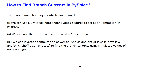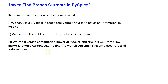Let us now consider PSpice. There are three main techniques which can be used to find branch currents in PSpice. Similar to LTSpice, we can use a zero-volt ideal independent voltage source to act as an ammeter. We can also use the inbuilt add current probe command. Finally, the third option is that we can leverage the computation power of Python and circuit laws to find the branch currents using simulated values of node voltages. Let us see these three techniques in action.